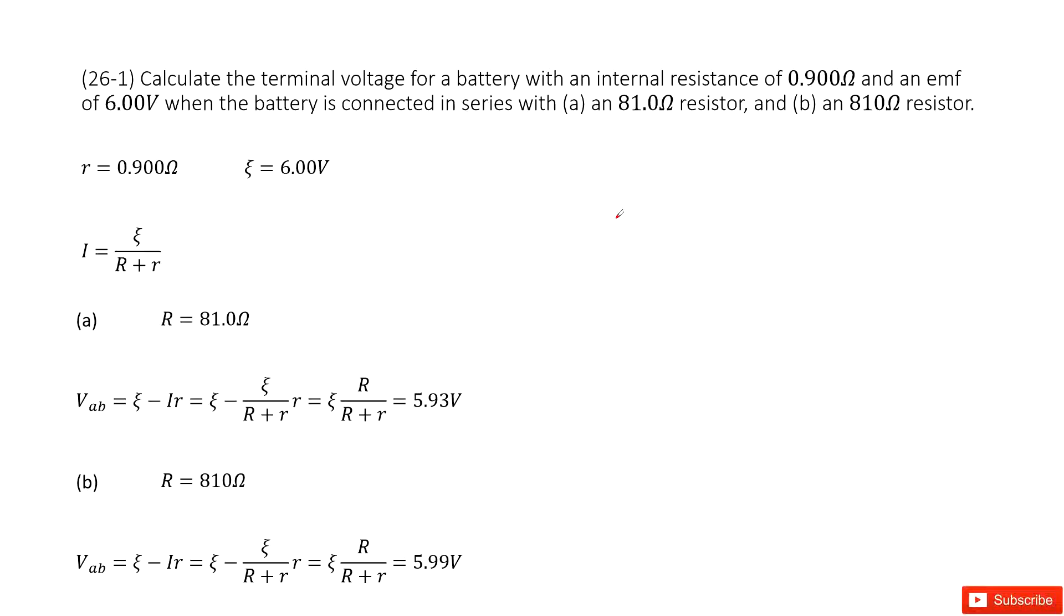We need to consider the internal resistance of battery. Now let's list the given quantities. First, the internal resistance is 0.9 ohms, and the emf of this battery is 6 volts.